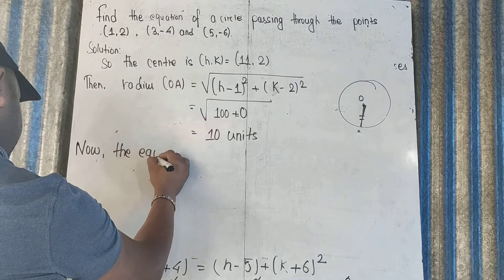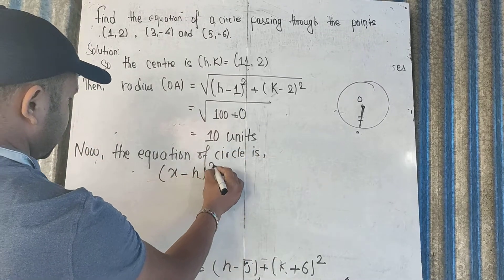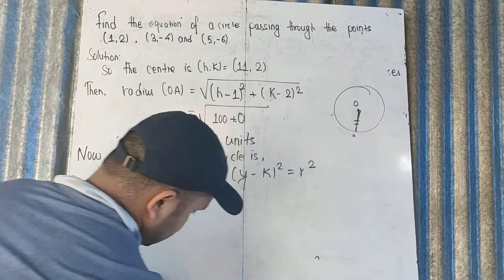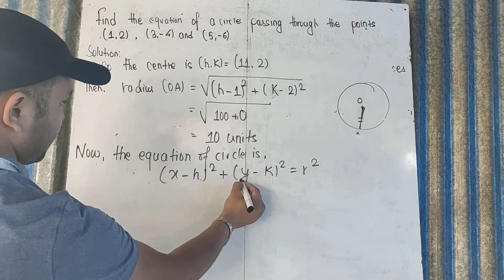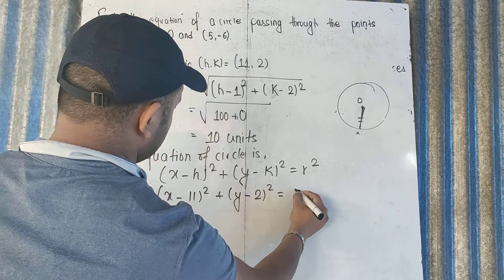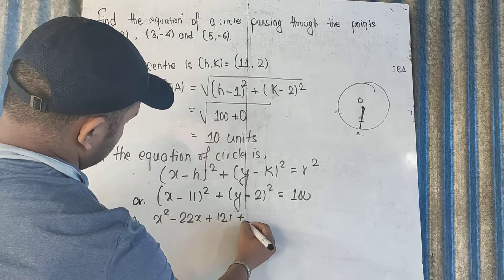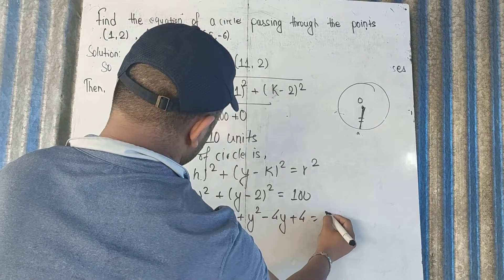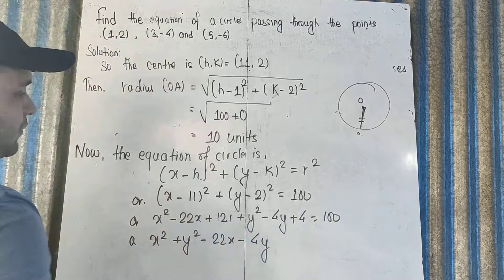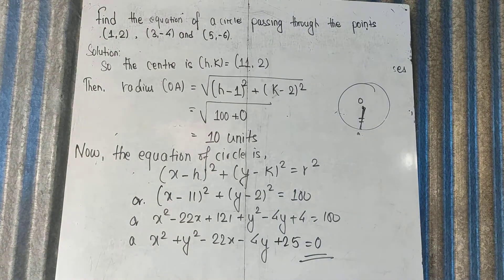Now the equation of the circle is given by the formula (x minus H) squared plus (y minus K) squared equals r squared. Substituting our values we get x squared plus y squared minus 22x minus 4y plus 121 plus 4 minus 125 equals 0, which gives the required equation of the circle. Hope that you understood it.